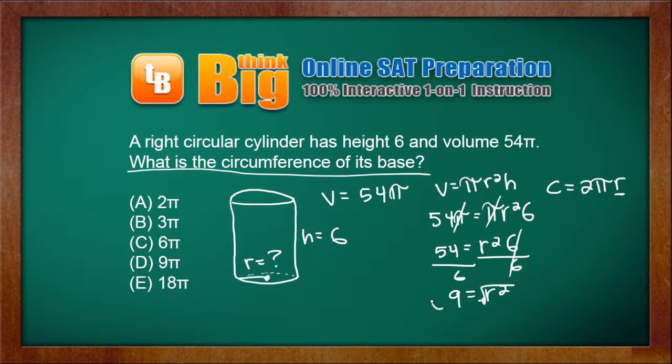Take the square root of both sides. The square root of 9 is 3. The square root of r squared is r. Now we have the radius, r equals 3.